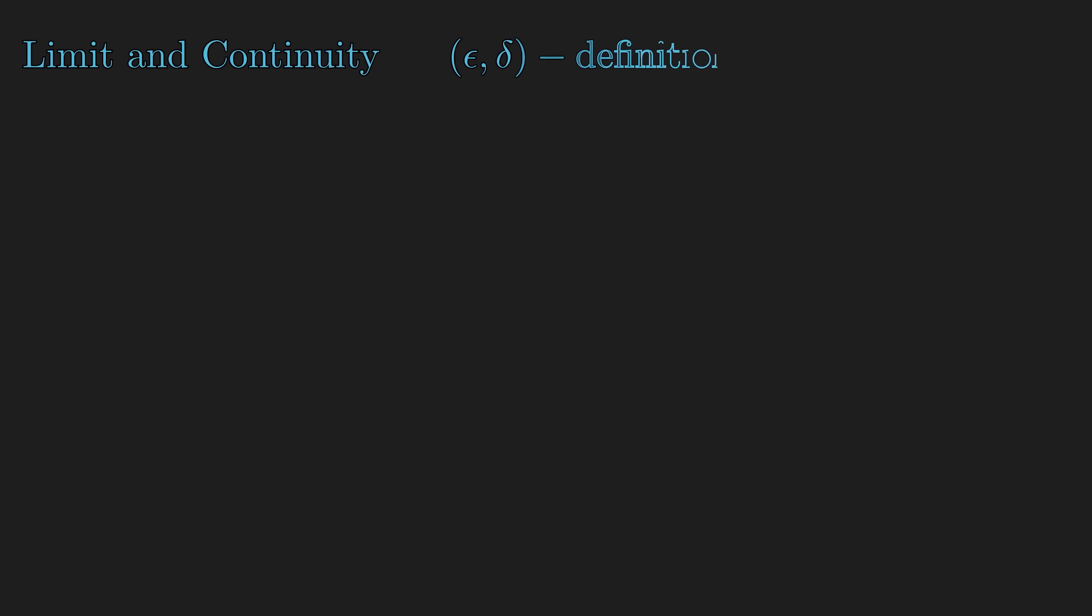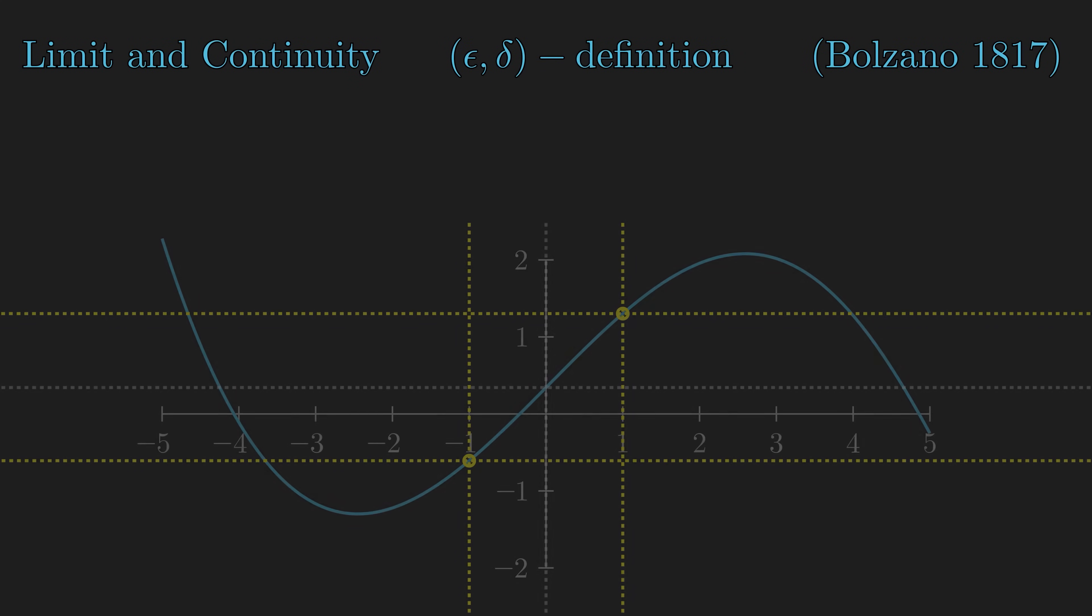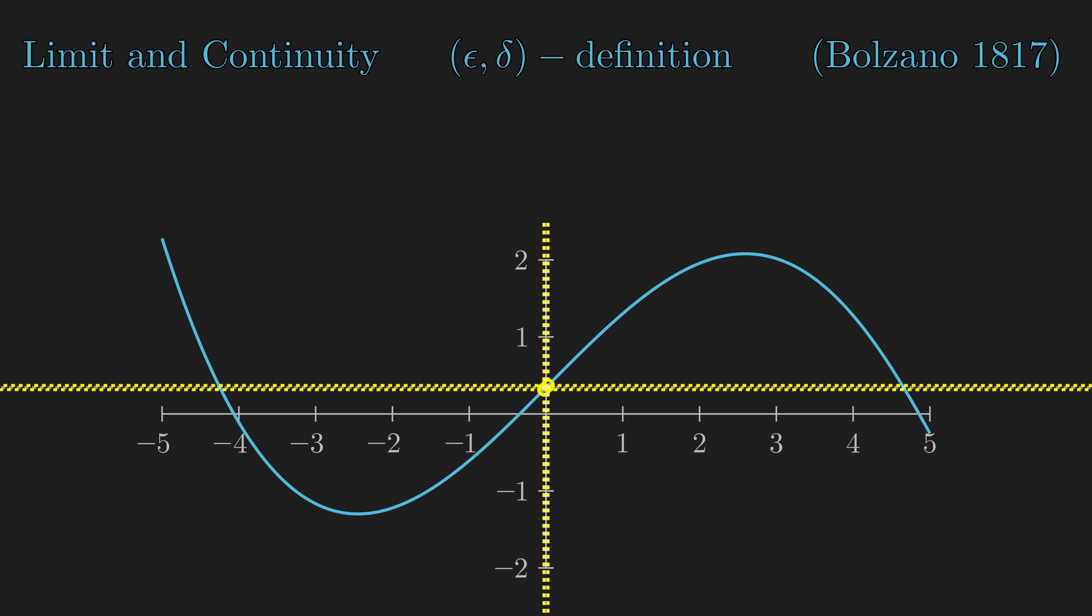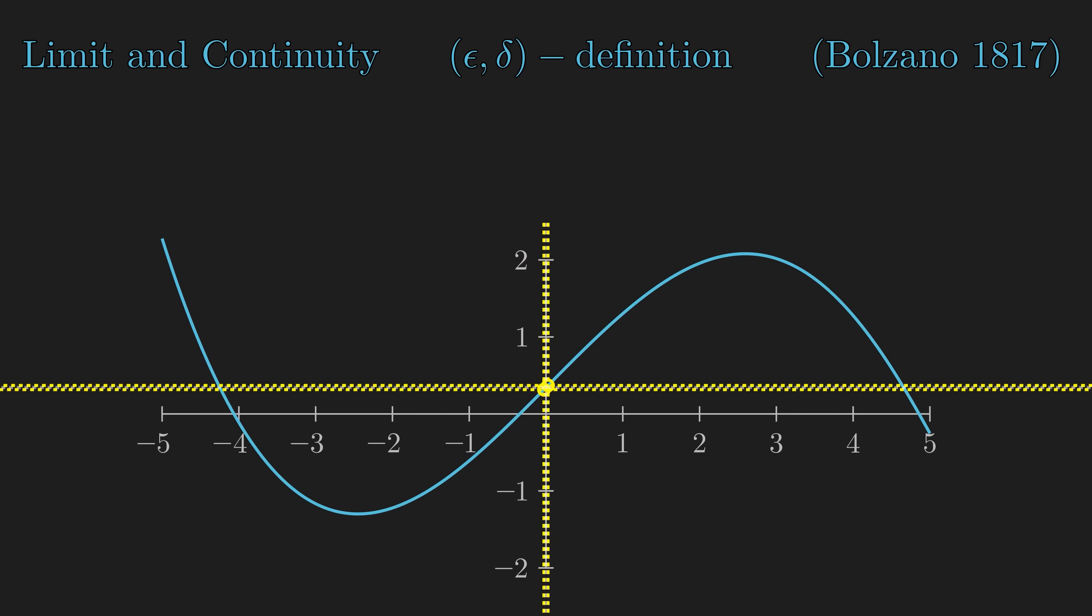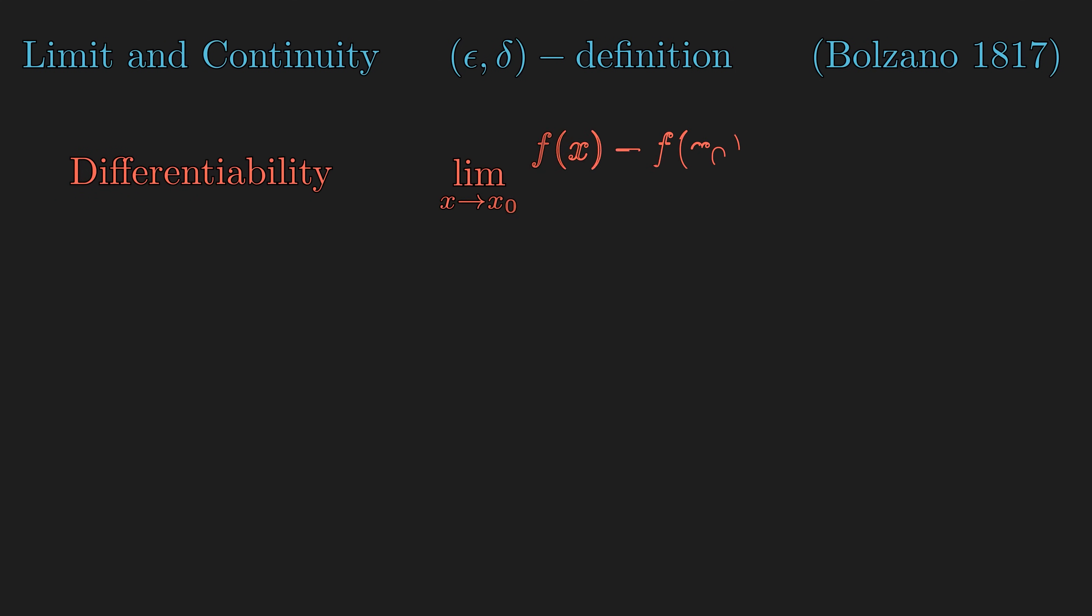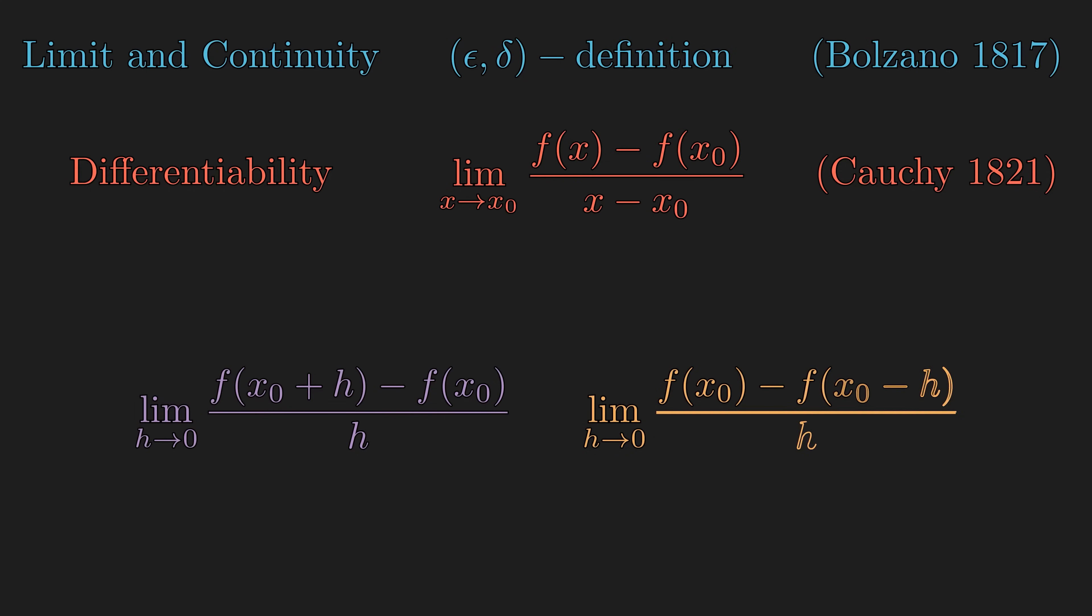The first attempt at rigorously defining calculus began with Bolzano's definition of limit, which formalized the notion of approaching a value as we get close enough from all sides using formal logic. Then, using this new idea of limit, Cauchy formally defined what a derivative is. There are alternate definitions that we use today, but they're not exactly different since we can get them from change of variables.